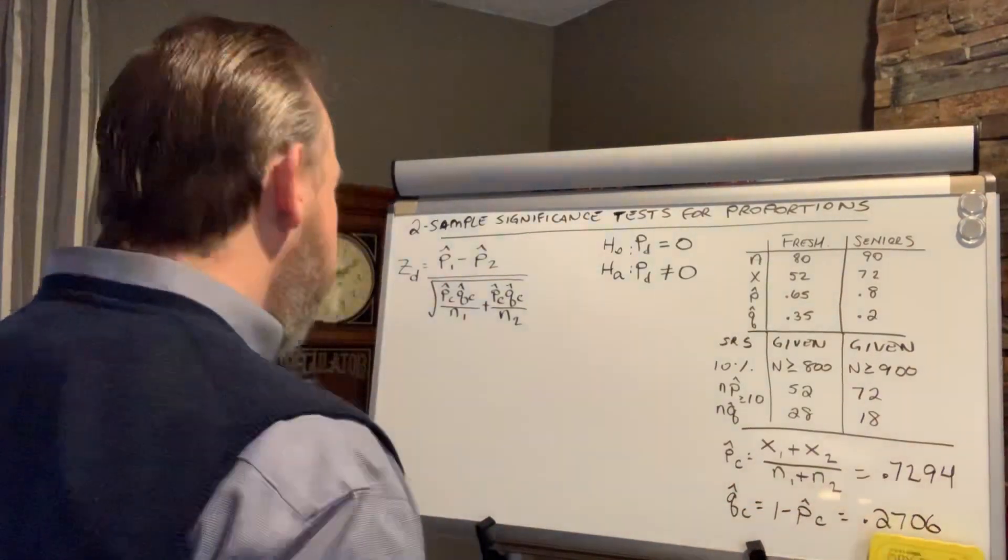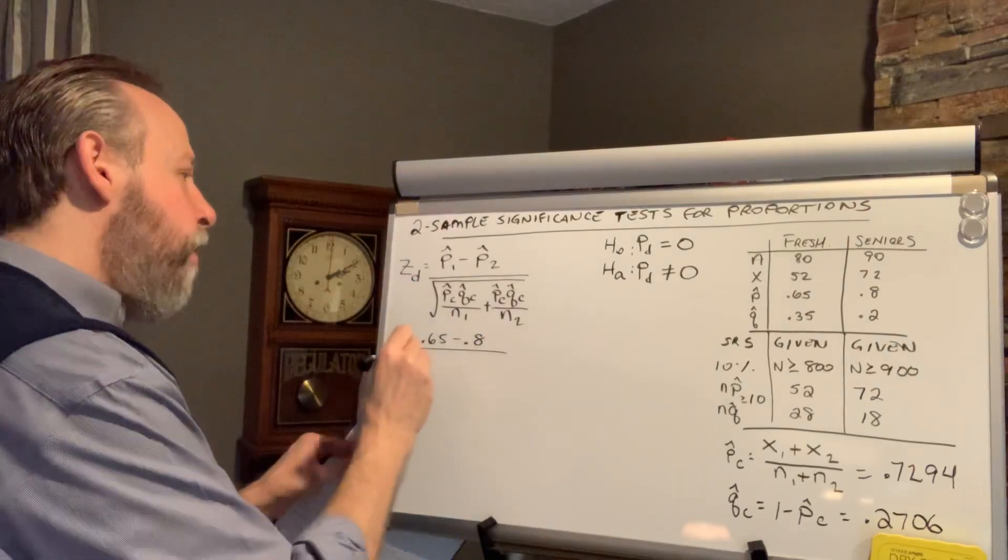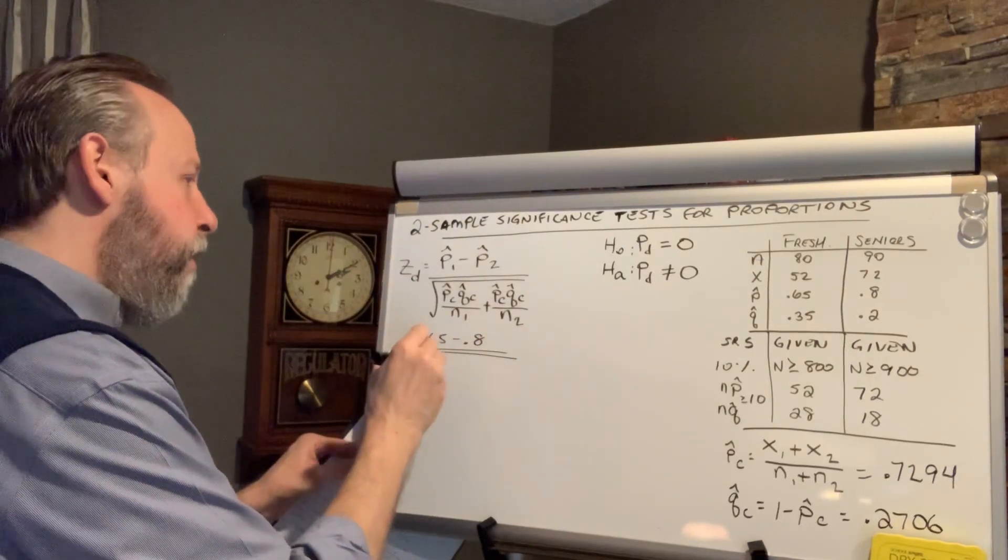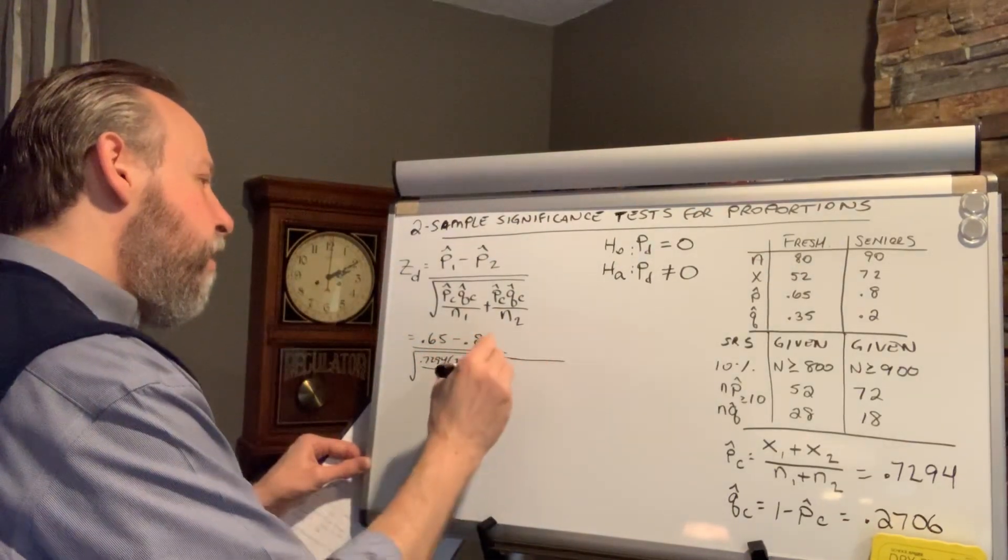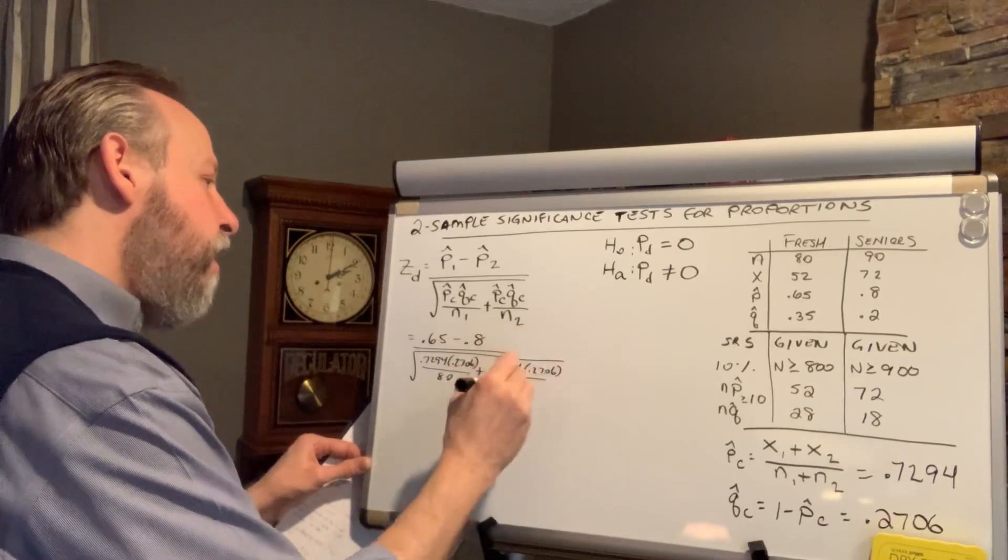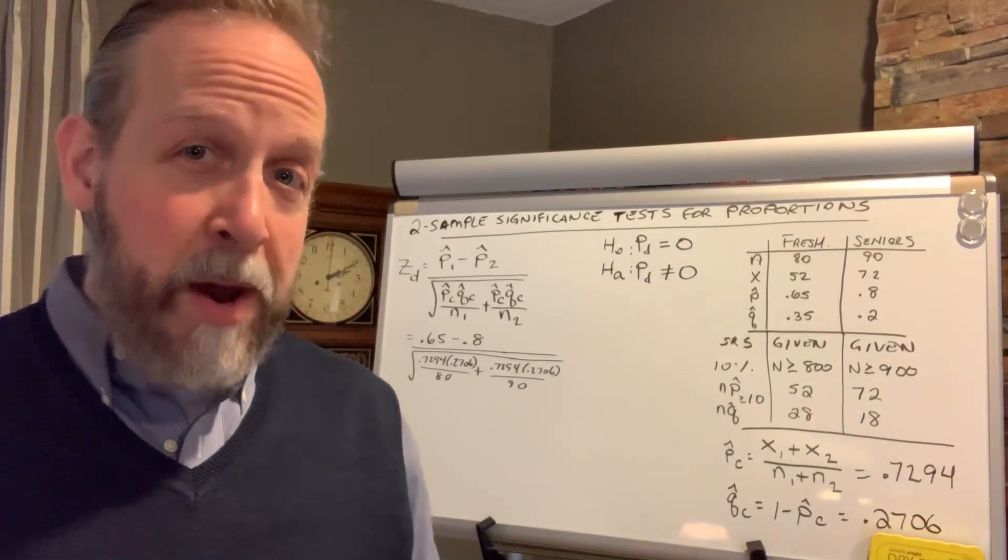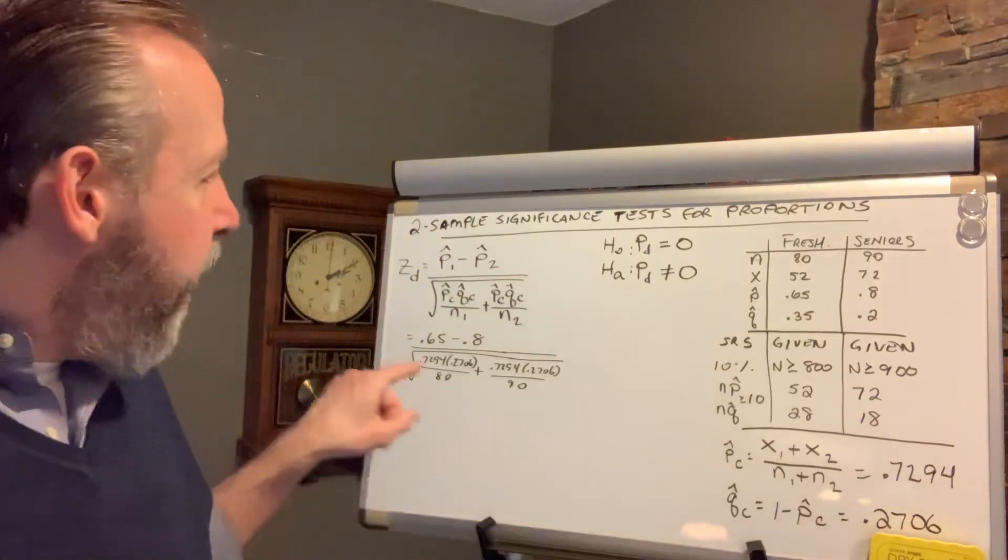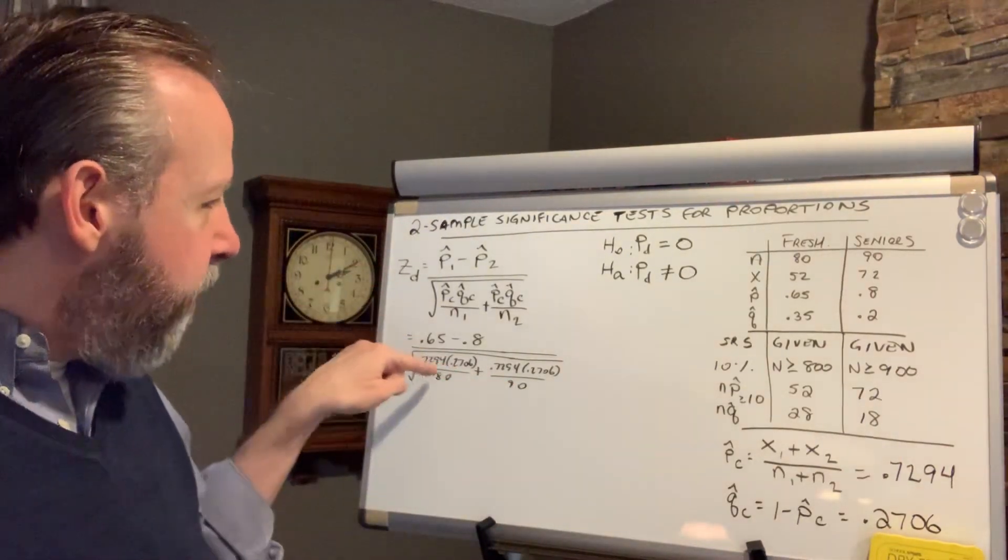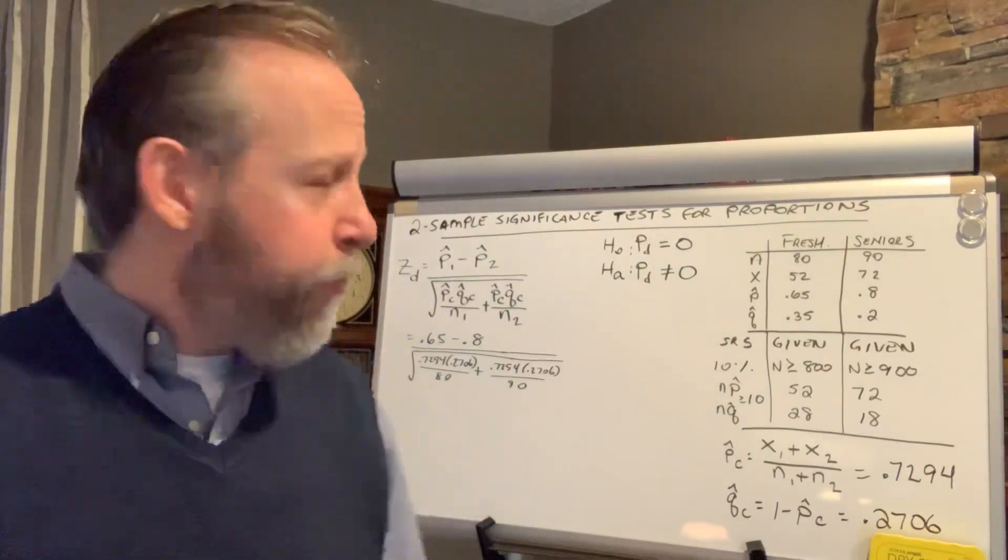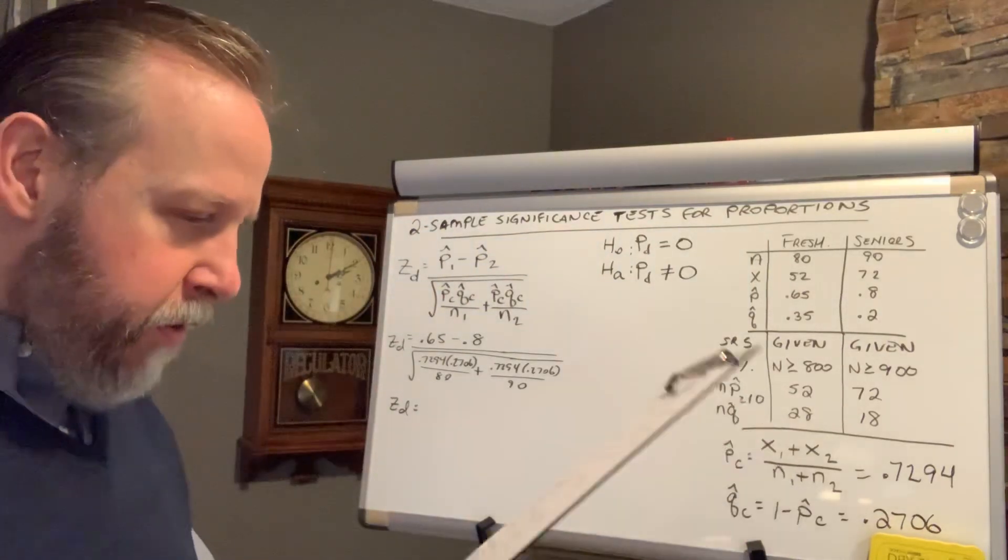So, now let's find out what we get for our z-score for the difference. It's 0.65 minus 0.8 over the square root of 0.7294 times 0.2706 over 80 plus 0.7294 times 0.2706 over 90. If you want to put it all in your calculator, feel free to do so. Just please put parentheses around the numerator before you divide by the square root of. You can just type this all in as it appears. You don't even need parentheses in the calculator for the denominator. It knows what to do. I get a z-score for this particular problem of negative 2.1962.